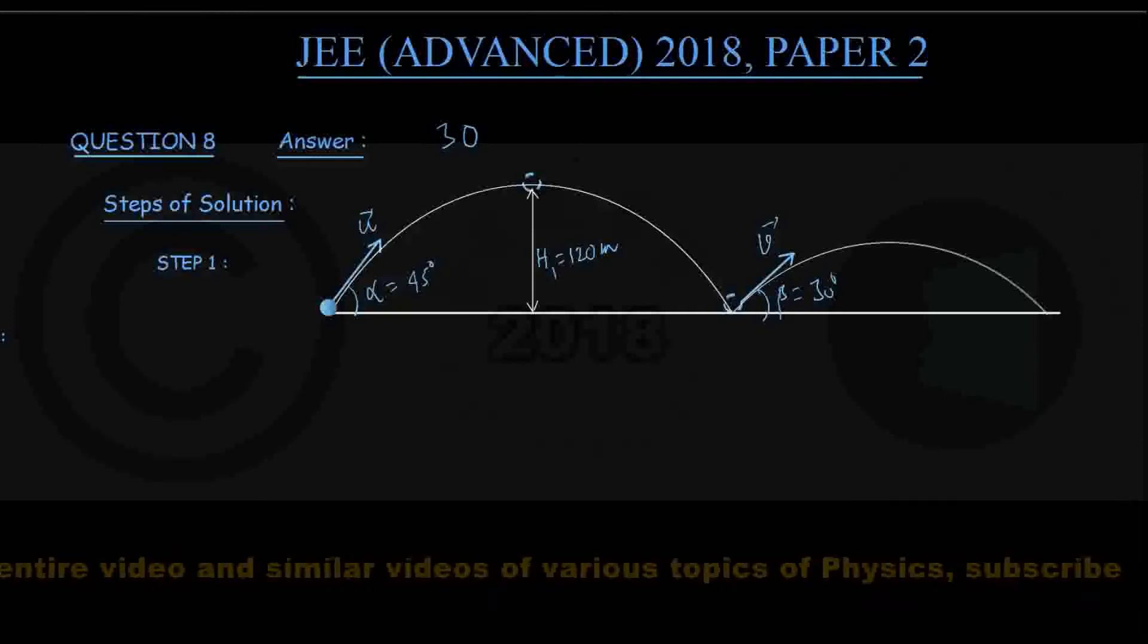Again the ball reaches some highest point. This is the maximum height. This is H2. And eventually the ball hits the ground again. That is the whole scenario.